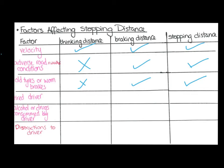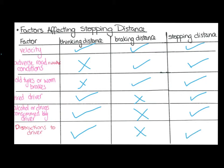A tired driver affects the thinking distance because tired people have slower reaction times — it takes longer to recognise they need to apply the brakes. It shouldn't change the braking distance but will change the stopping distance. Alcohol or drugs will have a big impact on the thinking distance due to their effect on reaction time, and won't change the braking distance but will change the stopping distance. Similarly, distraction increases reaction time and thinking distance, and therefore changes the stopping distance.